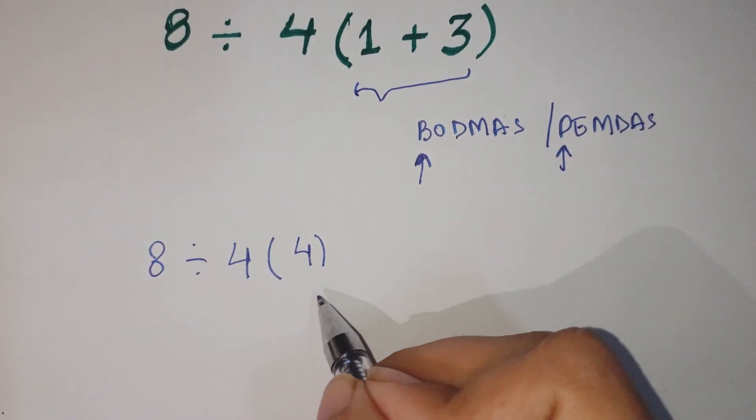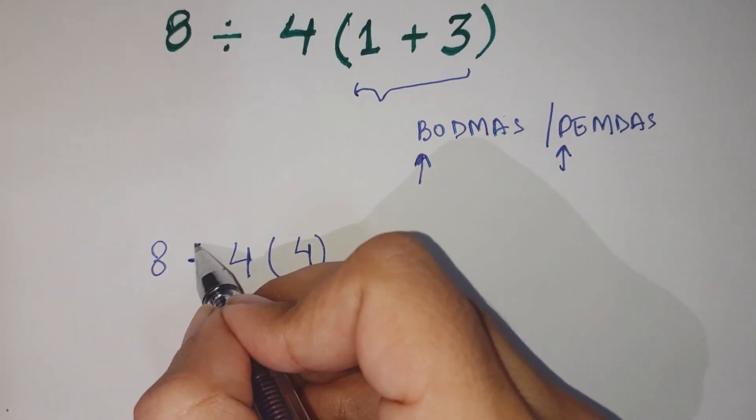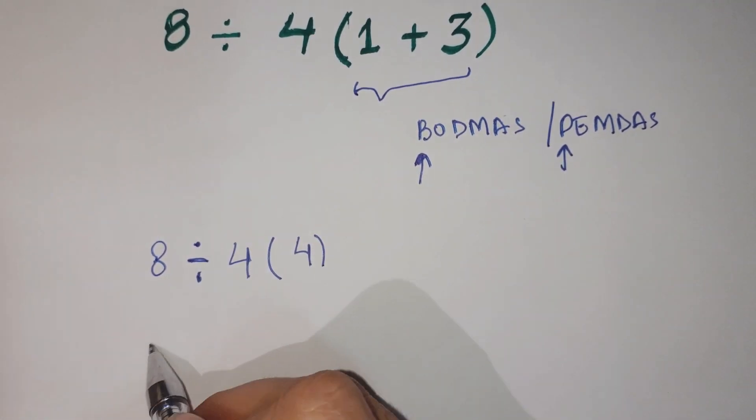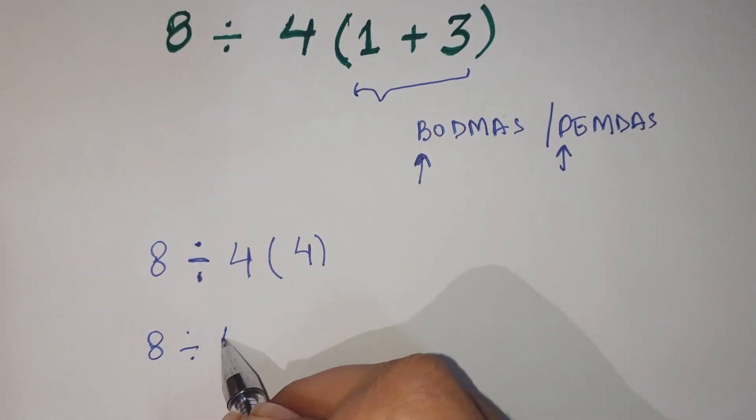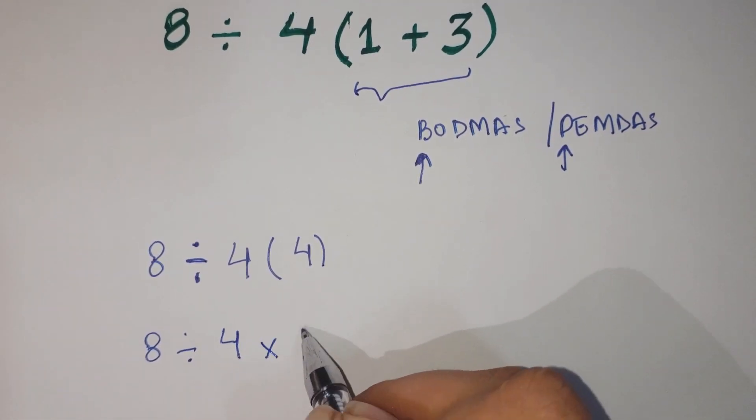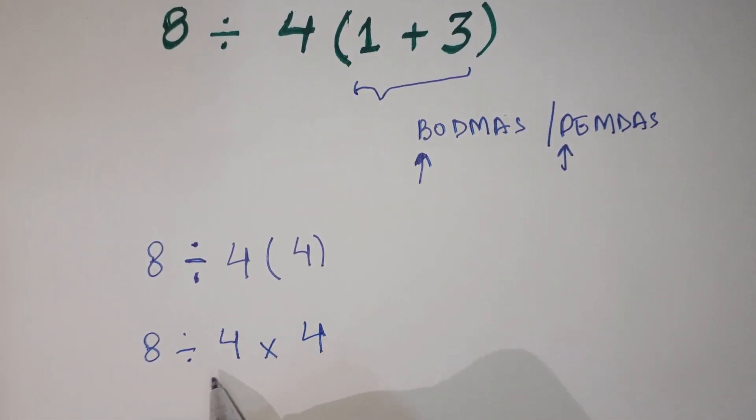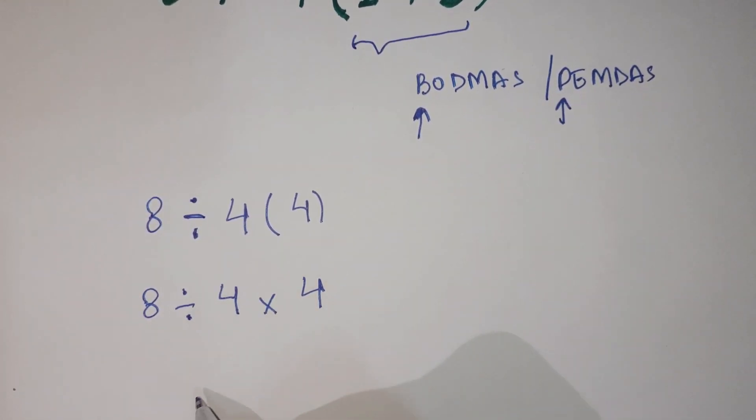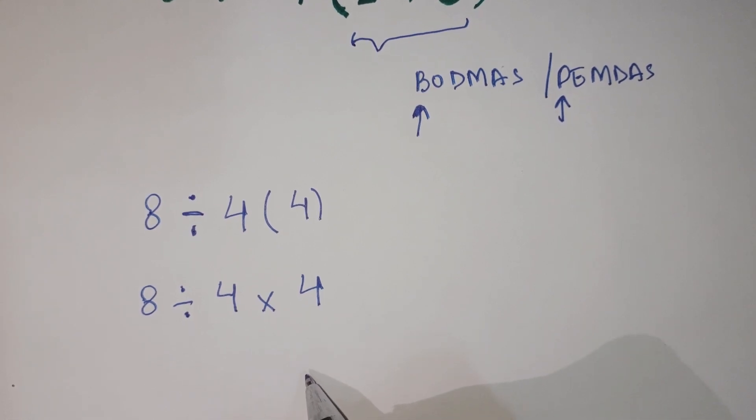Now again you get the bracket sign but in this bracket sign there is a sign of multiplication implicit in it. So we will just write it again and give it a format of this. That is 8 divided by 4 multiplied by 4. Now you have this expression having only division and multiplication sign.